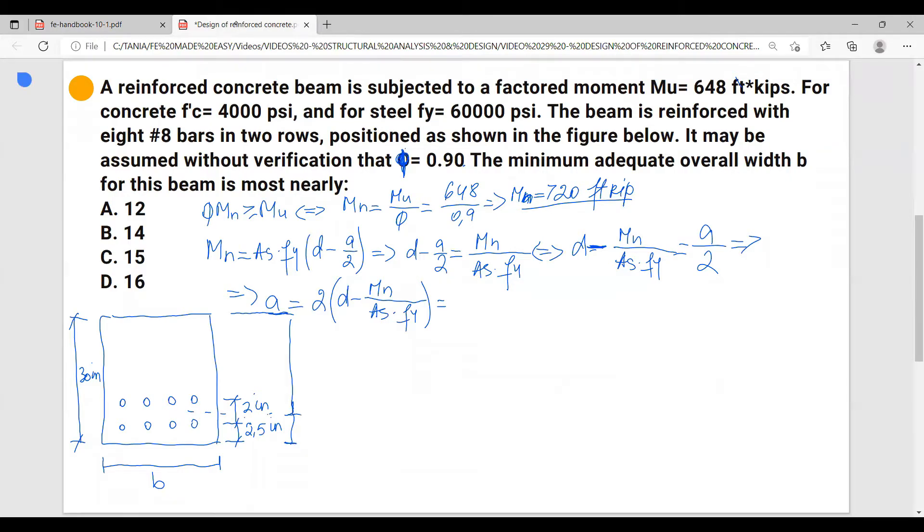So if we have a total of 30 inches and then the distance from here to here we have 2.5 and then middle of this, this is going to be 3.5. So d equals 30 minus 3.5, so I get 26.5 inches.